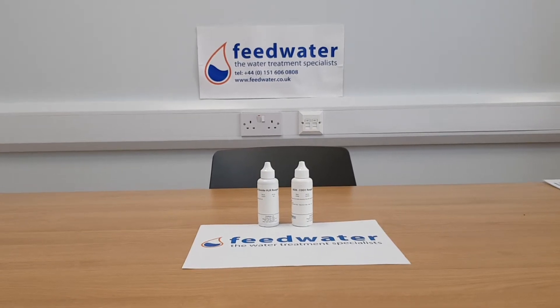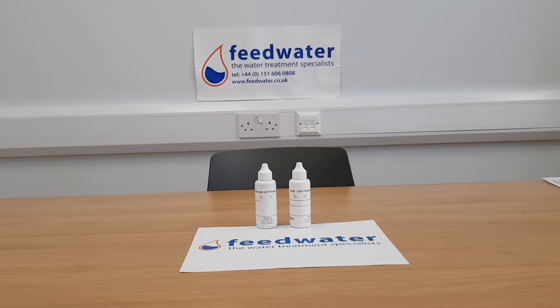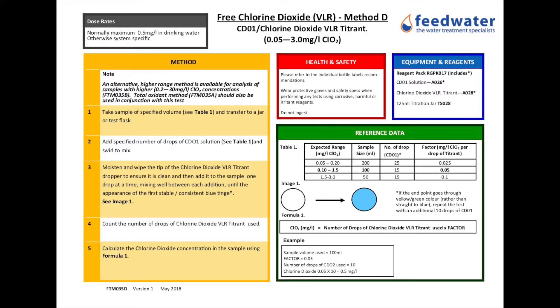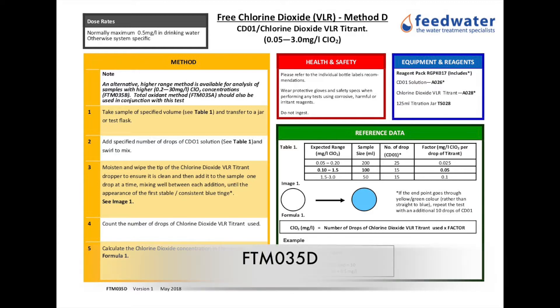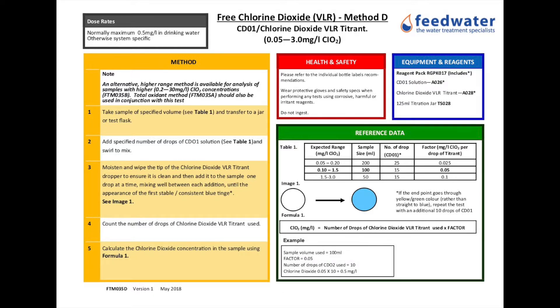Today we are going to demonstrate a field test method for measurement of free chlorine dioxide in water. This is a titration method and the reference code for this method sheet should you need to request it is FTM 035D. The UK Health and Safety Executive Guidance Document HSG 274 Part 2, the control of Legionella bacteria in hot and cold water systems, indicates that for Legionella control a free chlorine dioxide residual of at least 0.1 mg per litre should be maintained at the outlets.